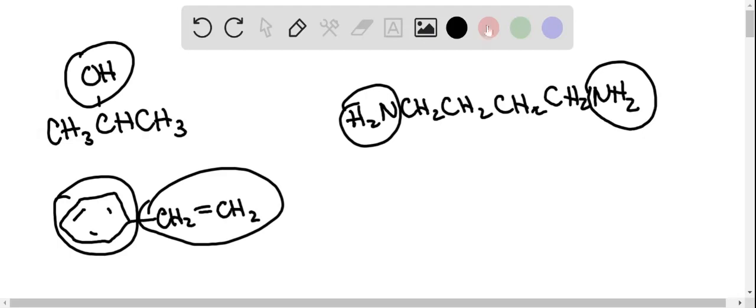In this problem we're asked to name functional groups. So in our first one here we have an OH group coming off of carbons and we call this an alcohol.